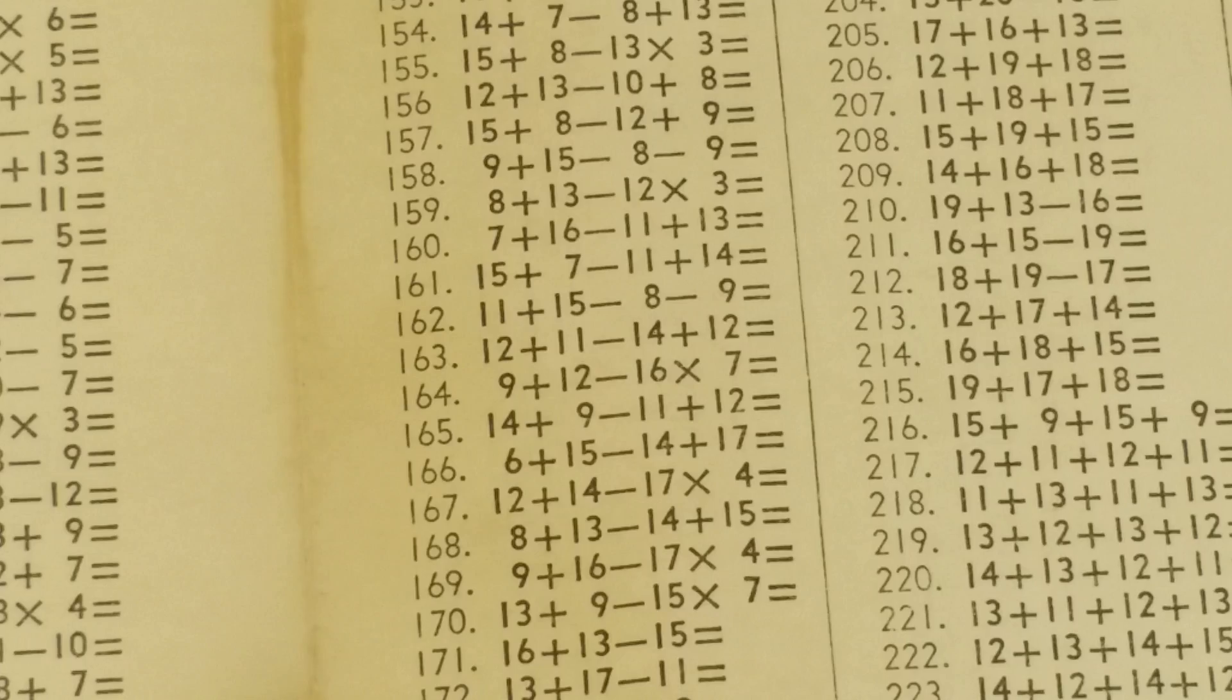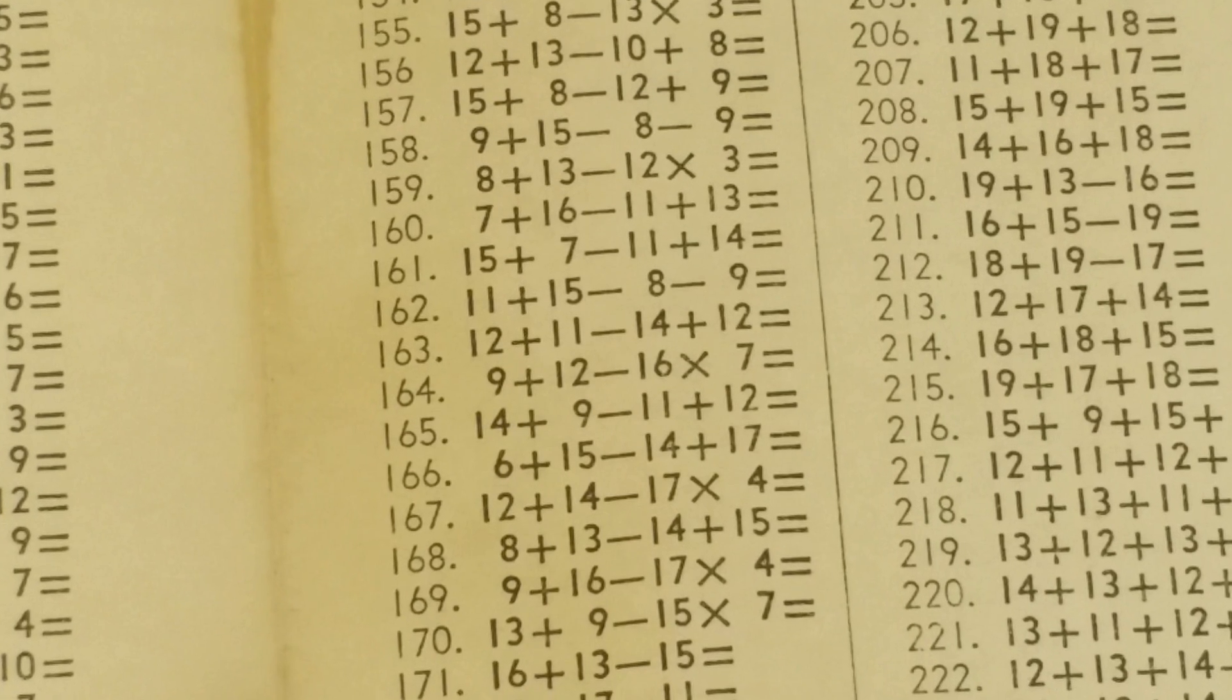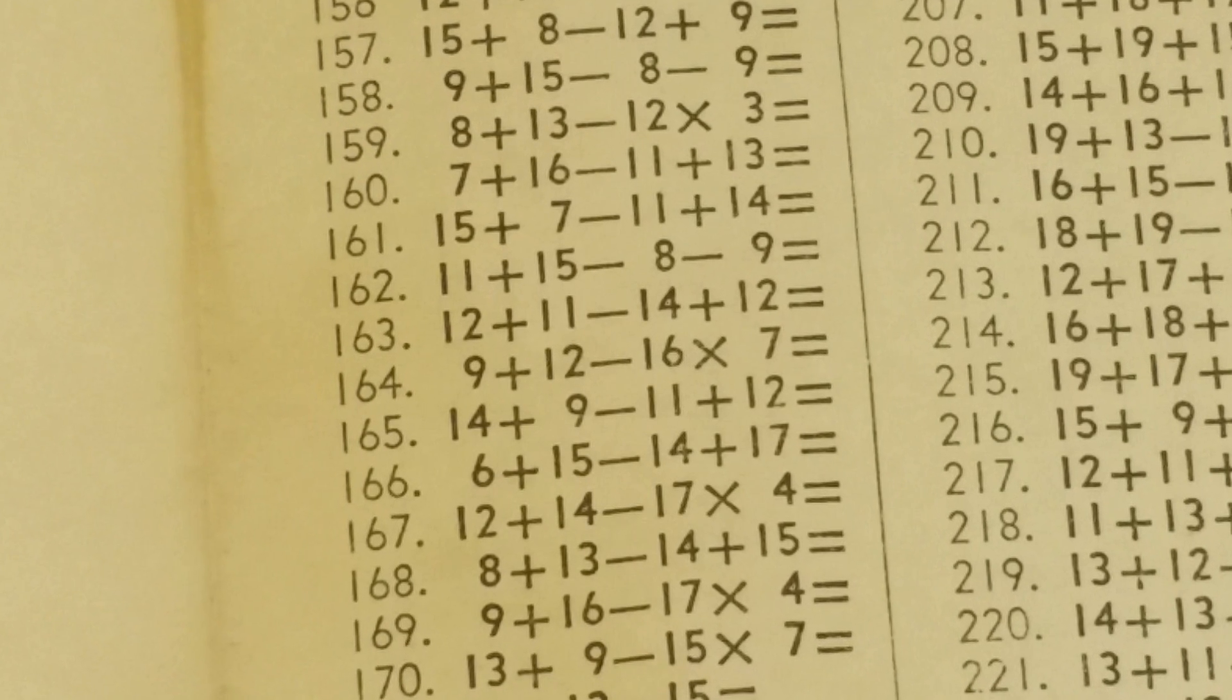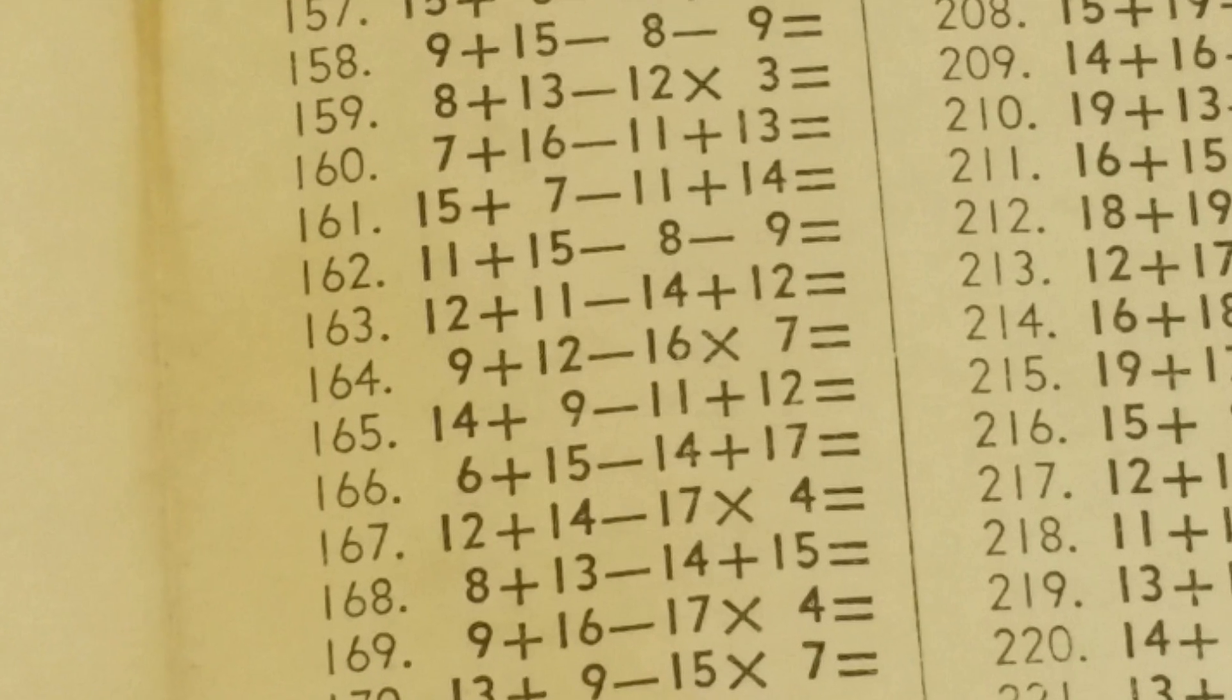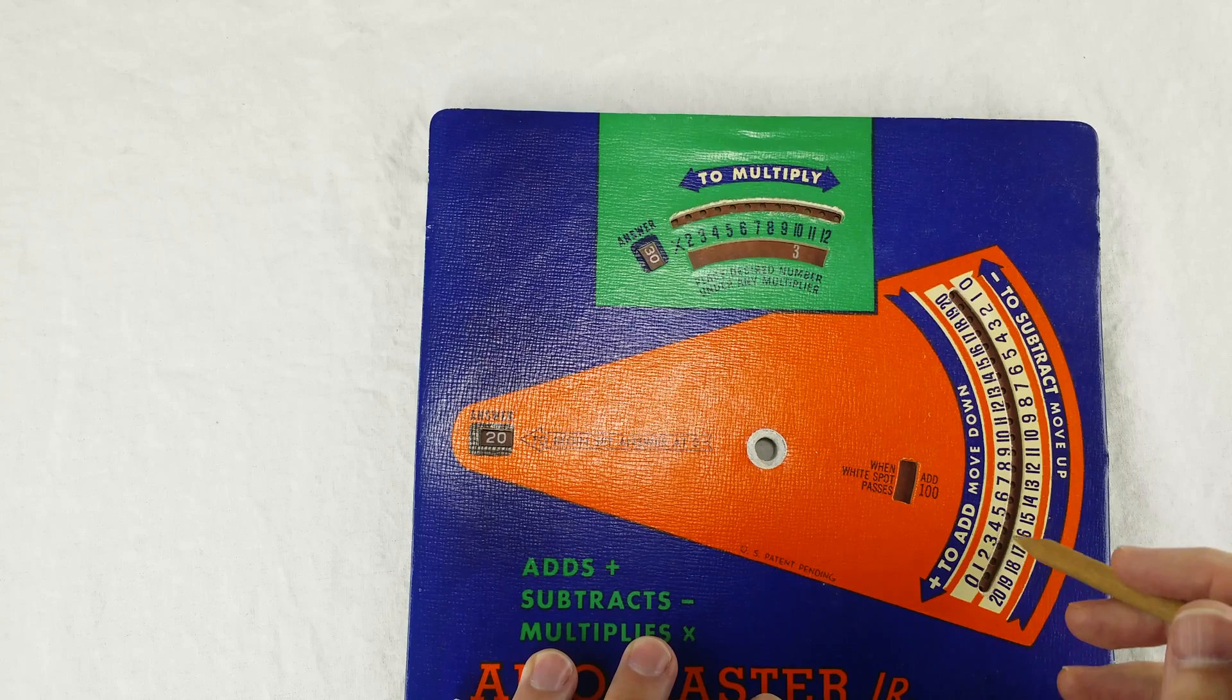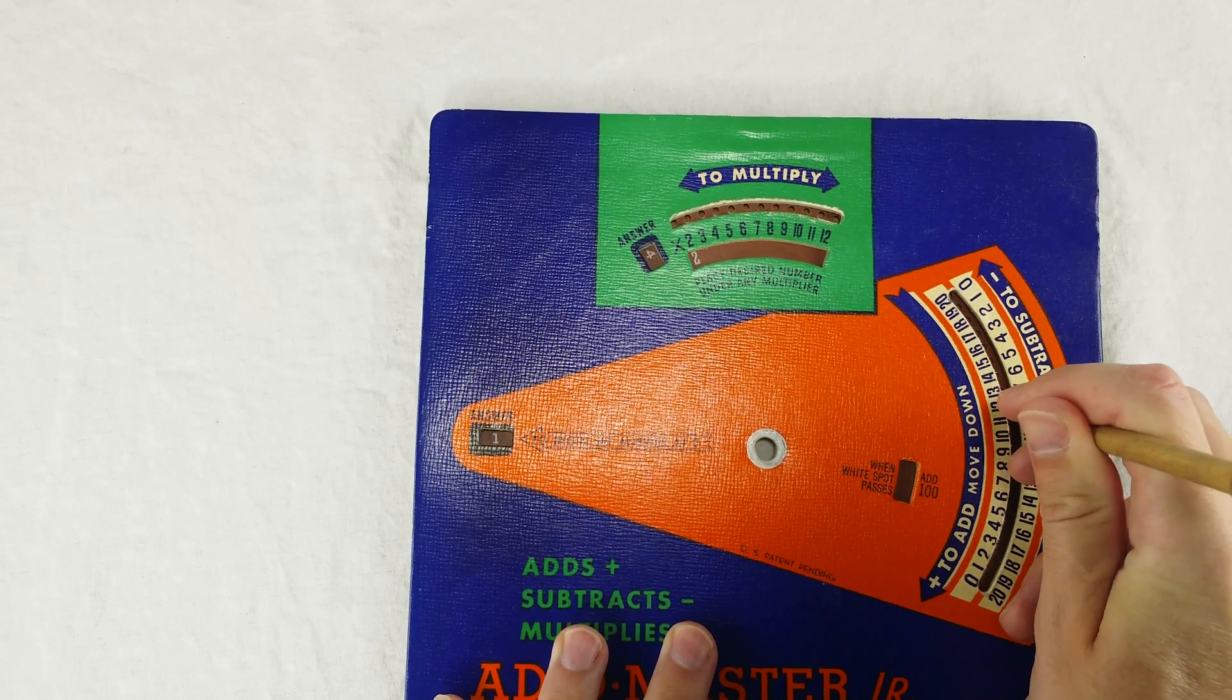The standard way of evaluating this would be to multiply 16 times 7 first, which you can't even do on the Add-O-Master Junior, the magic calculator. And then you would add and subtract, and you'd get a large negative answer, which is also impossible on the Add-O-Master Junior, the magic calculator. So they did it in the wrong order. I guess the internet's not the only one who's stumped.